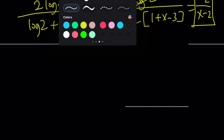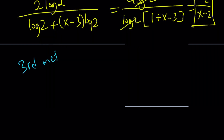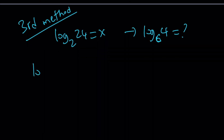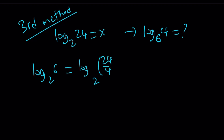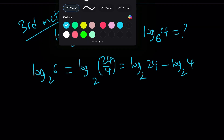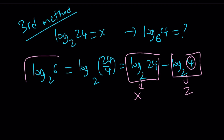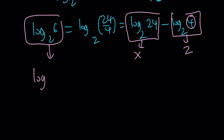Let's look at the third method. Our original expression log 24 with base 2 is given as x, and we're evaluating log 4 with base 6 in terms of x. I'll start with log 6 with base 2. Notice that 6 can be written as 24 over 4, so this breaks down into log 24 minus log 4 in base 2. The first part is x, and since 4 is 2 squared, log 4 with base 2 equals 2. Therefore log 6 with base 2 equals x minus 2.